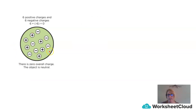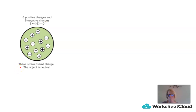Looking at this diagram: six positive charges and six negative charges. Six plus negative six equals zero, so there is zero overall charge and we say the object is neutral.